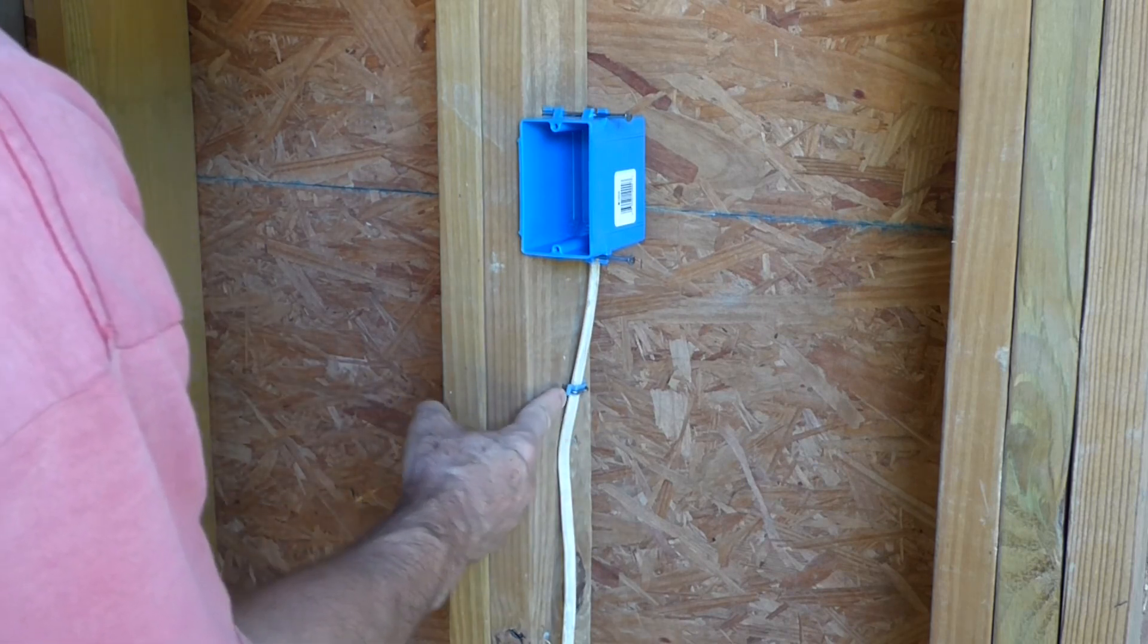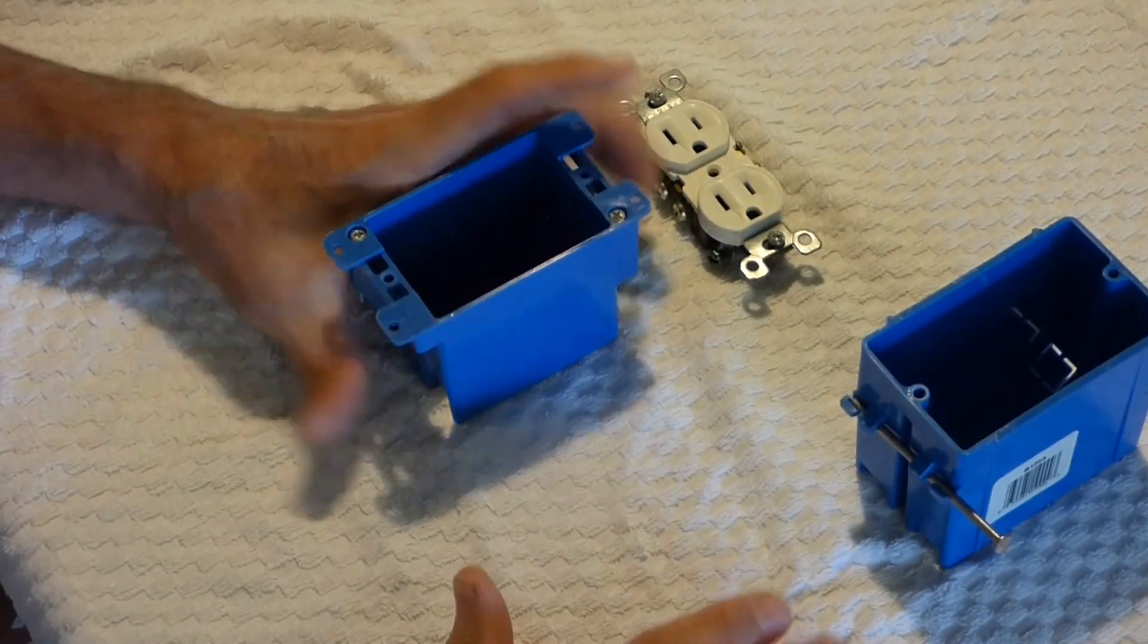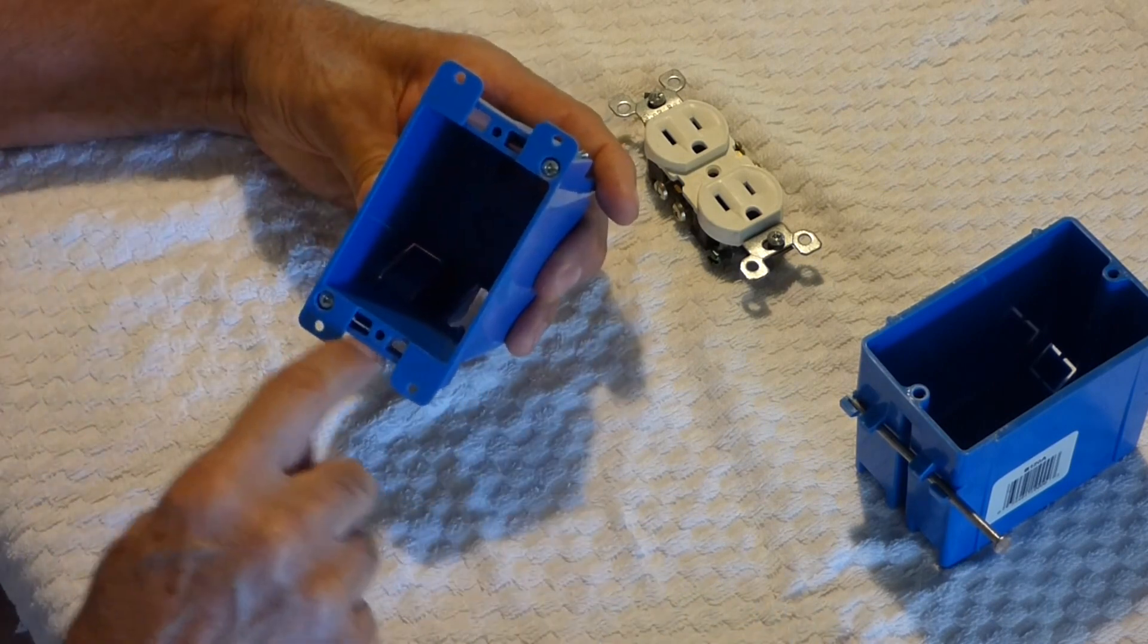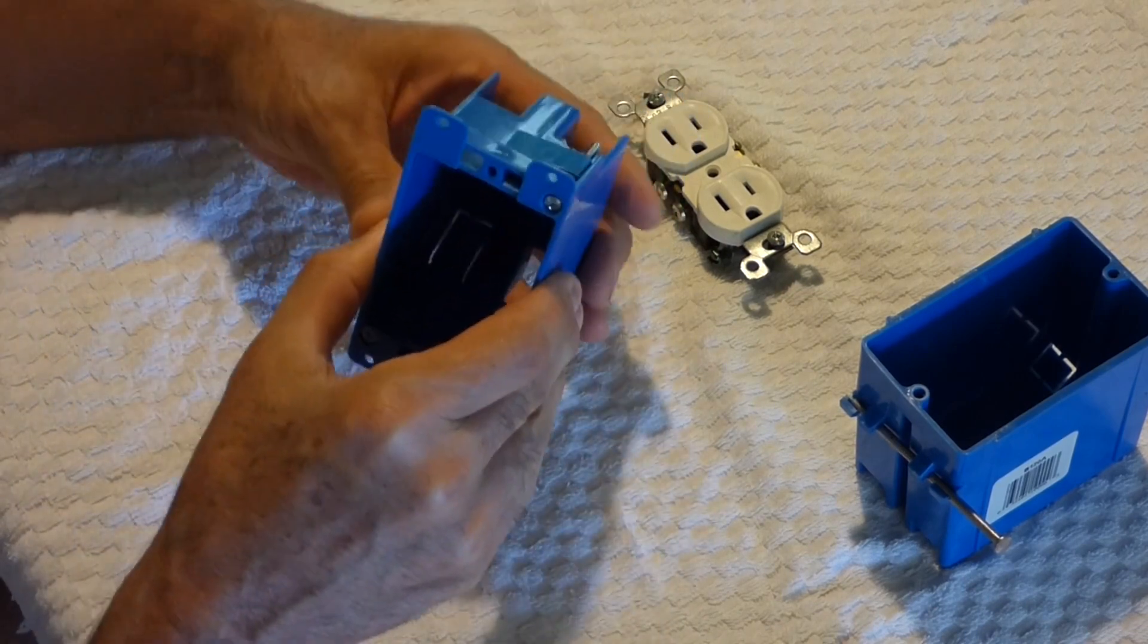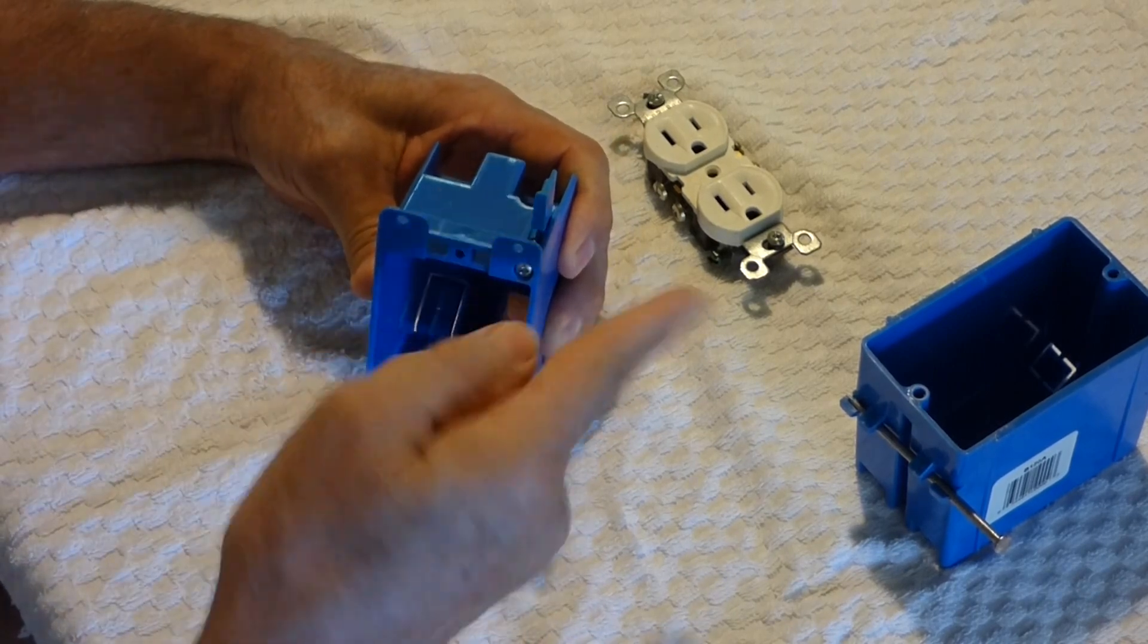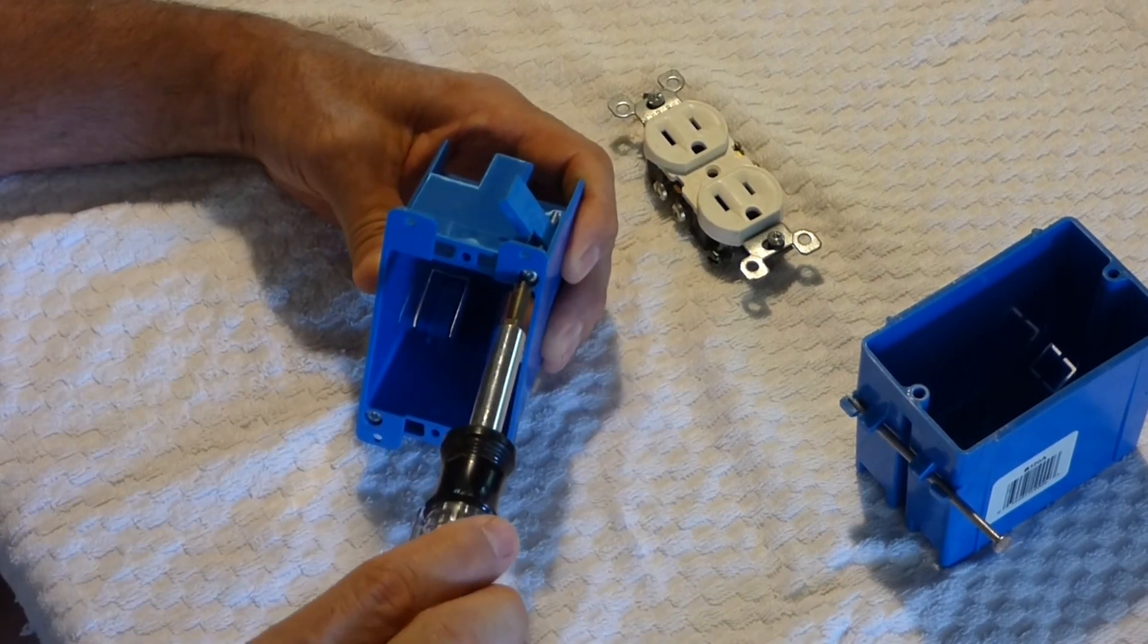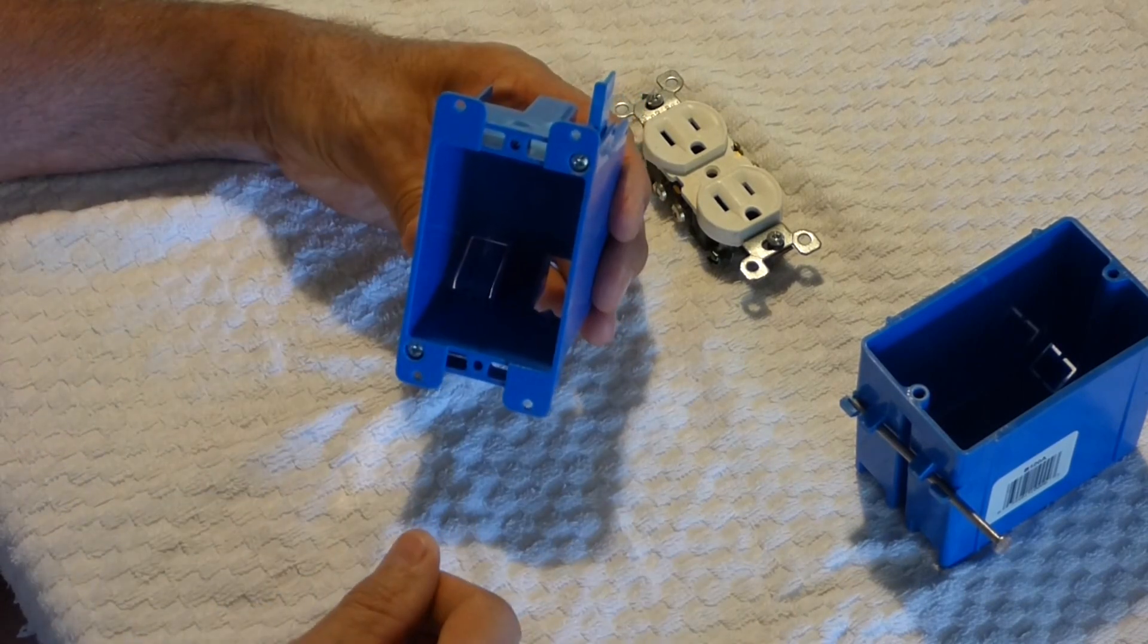You want to drive that staple down snug, but not far enough to damage the wire. If you already have a house that's sheetrocked and you want to add an outlet or switch, then you'd use a remodel box. You outline the box with a pencil, cut the sheetrock out, slide the box in the hole, and tighten these screws down. You see that tab flipped up, and the sheetrock will pinch in between the tabs and hold this box in place. You can pull the wire up through and add an outlet or a switch.